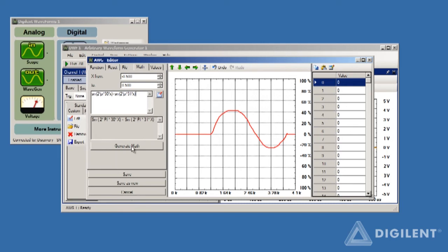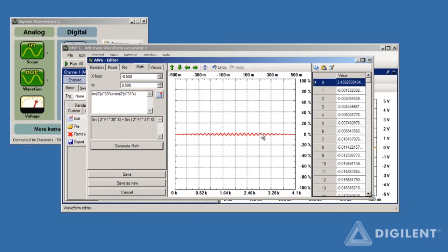To create the signal, click on Generate Math. This gives me extremely small amplitudes so I can just scale the whole thing by a number. I'll say I want to multiply the whole expression by 50.